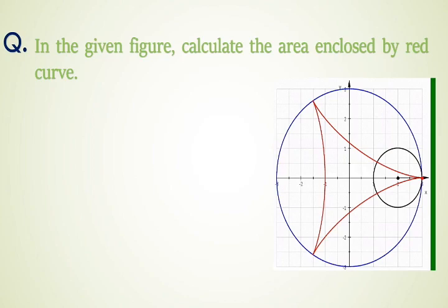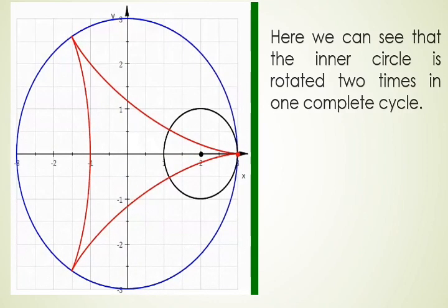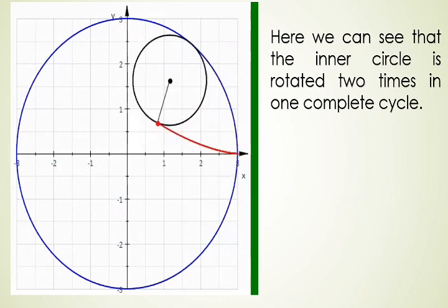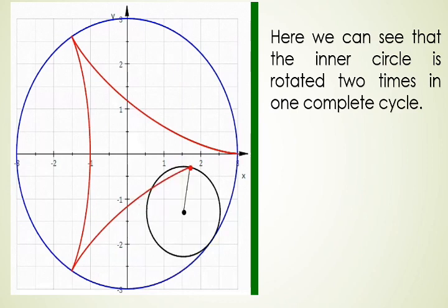If you have not tried this question yet, you can pause the video for more time. Here is the solution. Here we can clearly see that the inner circle is rotated two times in one complete cycle.